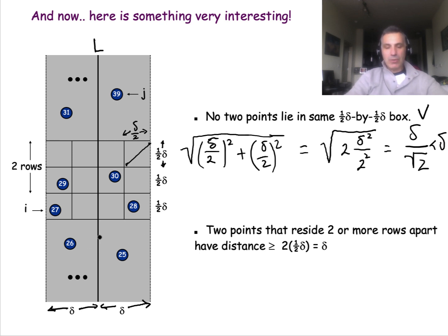The second observation is that if two points are two or more rows apart — for example point 27 and another point two rows above — then the distance between them would certainly be more than delta. This is because two rows add a distance of twice half-delta, which equals delta.